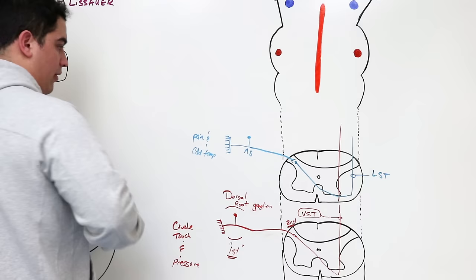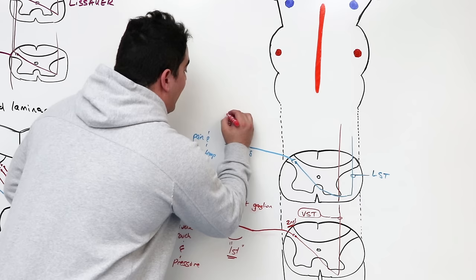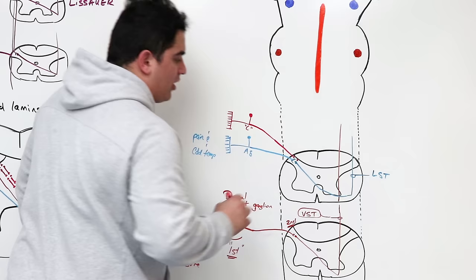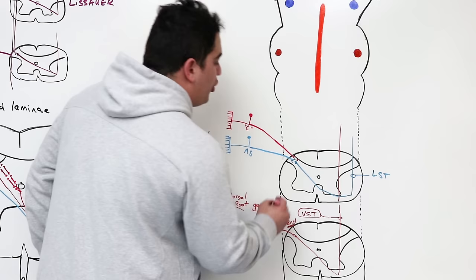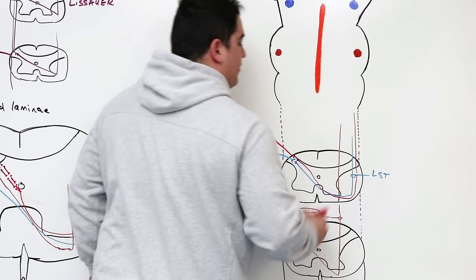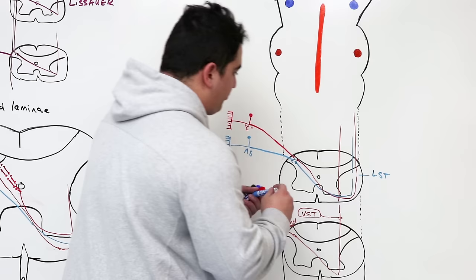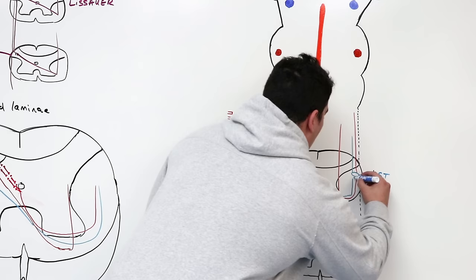The C fibers — responding to slow, dull, achy pain — come in, synapse on cell bodies in the dorsal gray horn, cross over via the anterior white commissure, and move upward. The lateral spinothalamic tract includes both the A-delta and C fiber pathways. They are called, respectively, the neospinothalamic pathway — for A-delta, the newer concept — and the paleospinothalamic pathway — for C fibers, the more primitive concept.